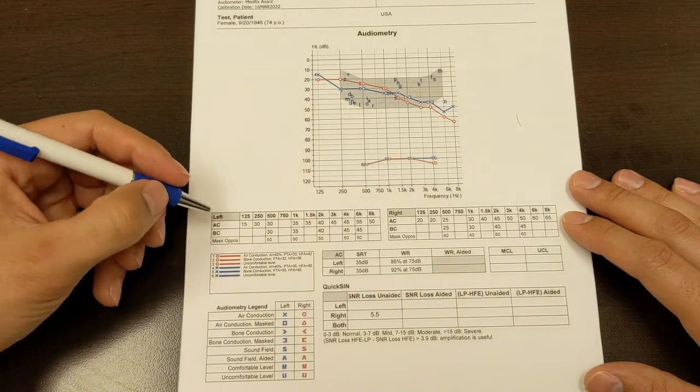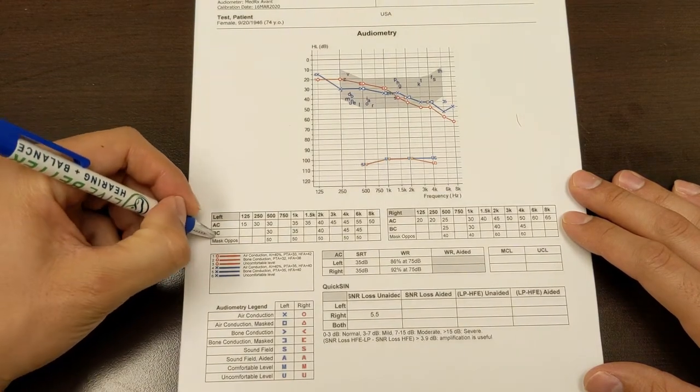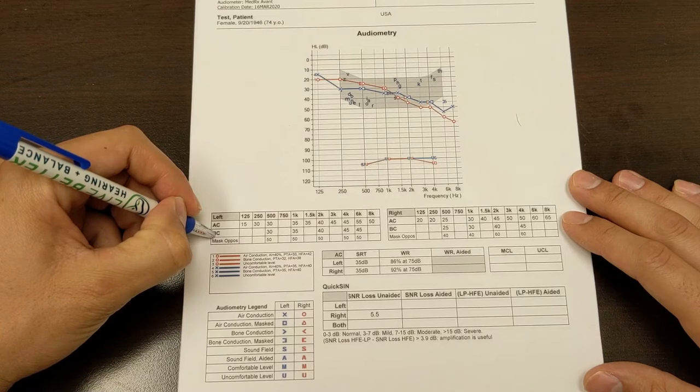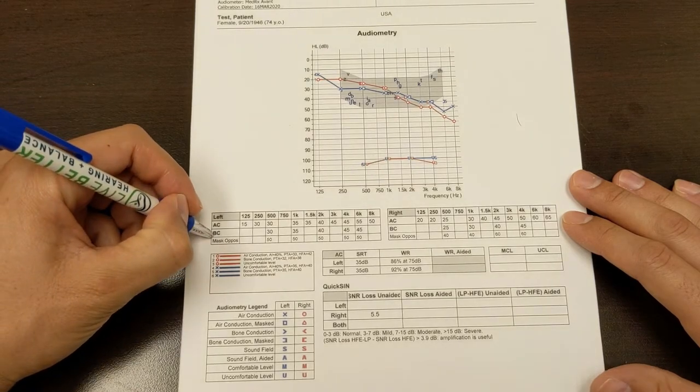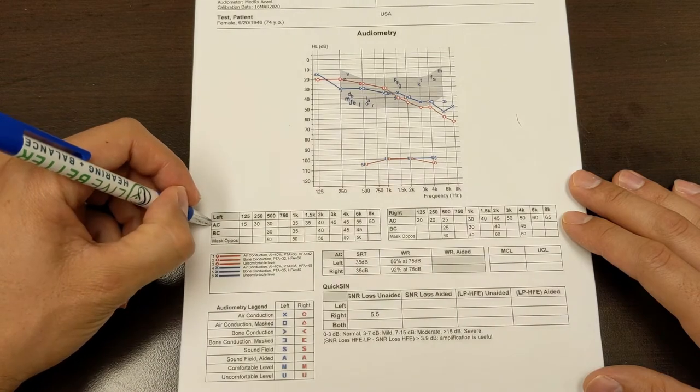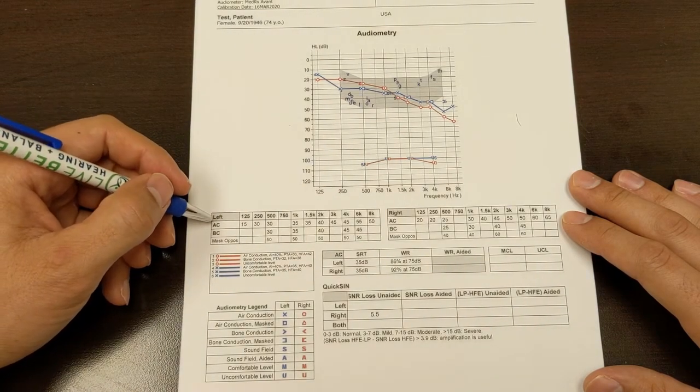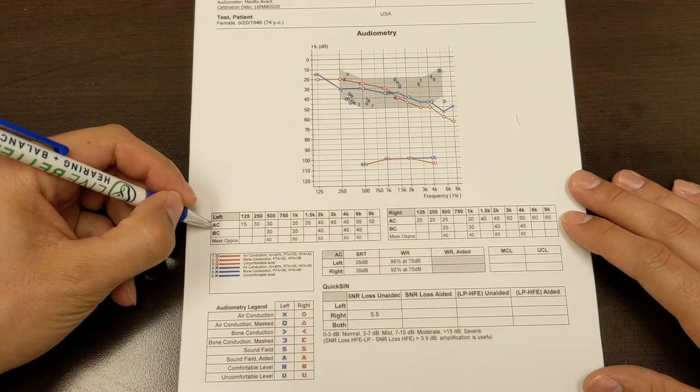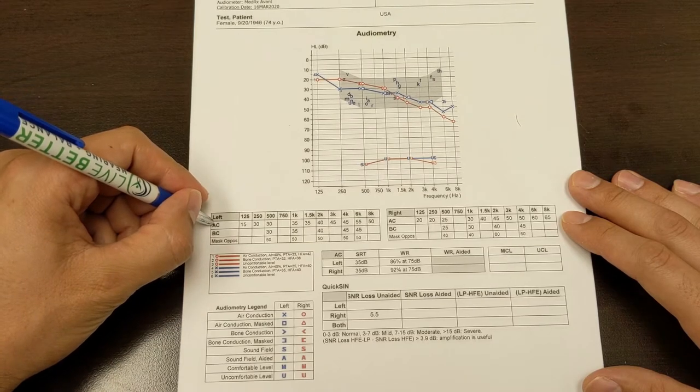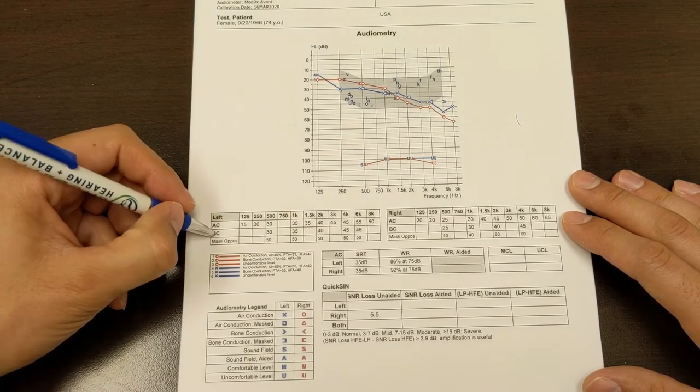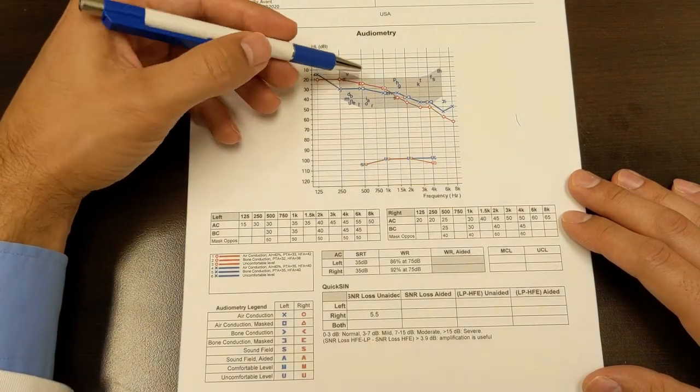So the purpose of doing those two tests is to see if the inner ear hears better than testing everything. Because if the inner ear heard better than testing everything, air conduction, that means that maybe you have earwax blocking your hearing. Or maybe you have a middle ear infection where there's fluid in your middle ear and sound is not being transmitted to your inner ear. So those two responses should be relatively the same.